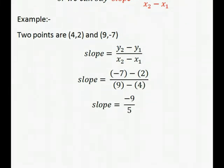Formula is (y2 minus y1) divided by (x2 minus x1). In the given problem, x1 equals 4, y1 equals 2, x2 equals 9, and y2 equals minus 7. Substitute all the values in the formula and calculate. So final answer is slope equals minus 9 by 5.